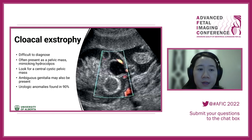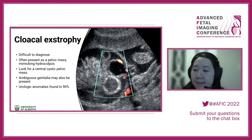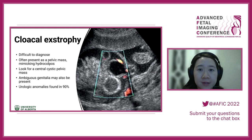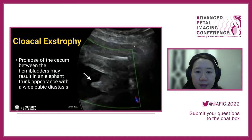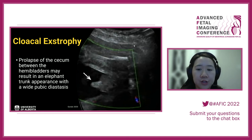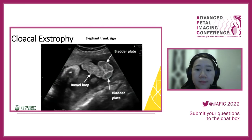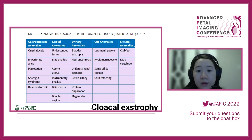Cloacal exstrophy can be quite difficult to diagnose — sometimes it presents as a central pelvic mass and ambiguous genitalia. Urologic abnormalities can be found in 90% of cases. Look for the cord inserting just superior to the abnormality. The prolapse of the cecum between the hemi-bladders results in an 'elephant trunk' presentation — a specific sign to look for on ultrasound. Additional abnormalities associated with cloacal exstrophy include the OEIS complex: omphalocele, exstrophy, imperforate anus, and spinal abnormalities.